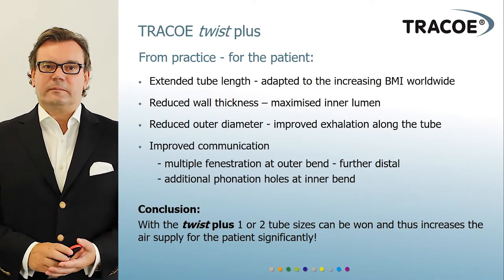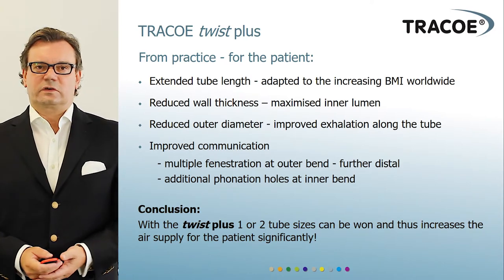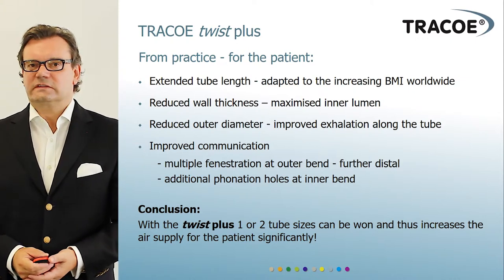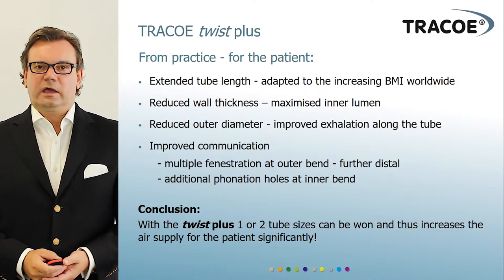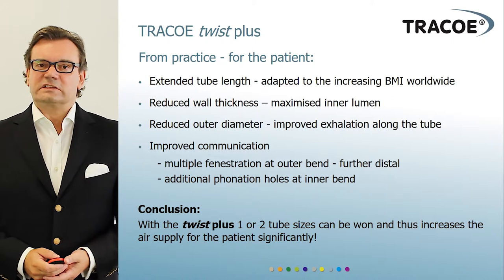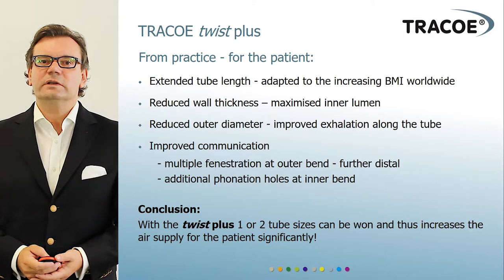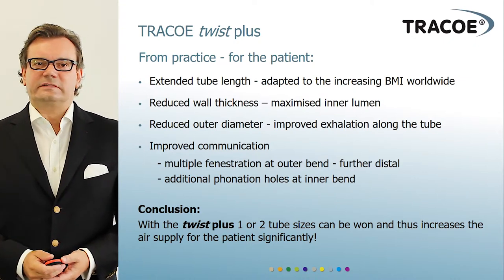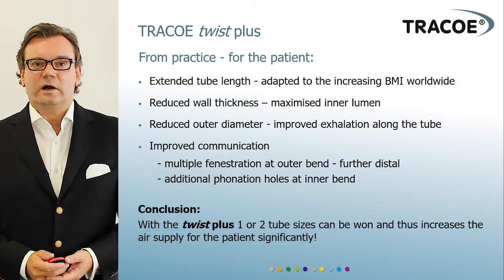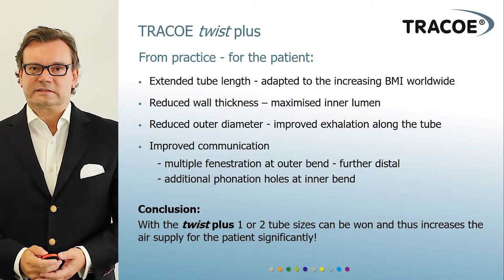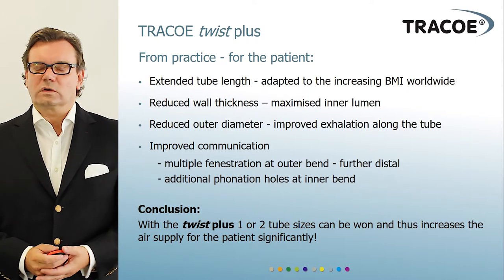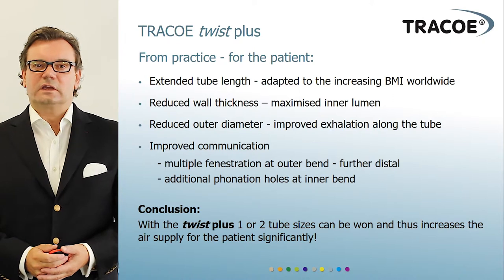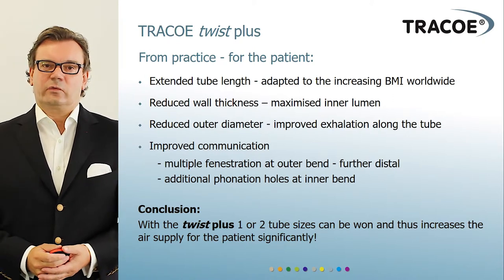Looking at our Twist Plus tube, it features several improvements: the length of the tube has been extended, which is very helpful for patients with a high BMI; the wall thickness has been reduced, allowing a better inner lumen and the best ratio between outer and inner diameter. It also has double fenestration — on both sides of the bend and additional holes on the inside of the bend — so that even if normal fenestration is blocked, two additional holes allow air to find its way to the upper airway.